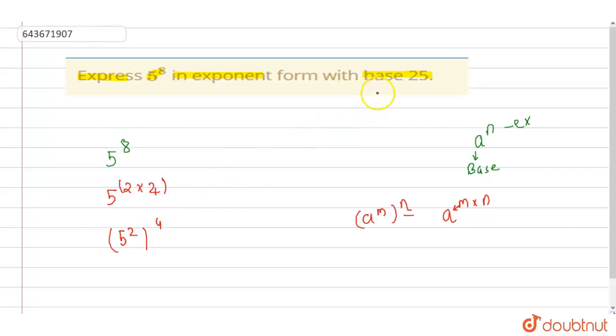So guys, it is base 25. So 5 square is equal to 25 to the power 4. Thank you students.